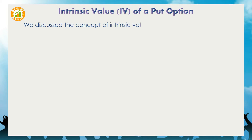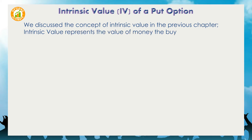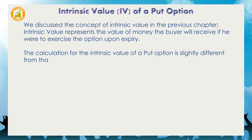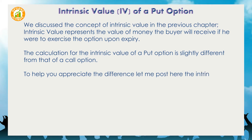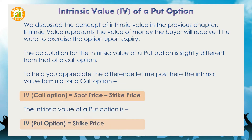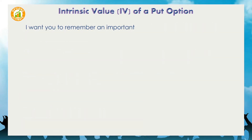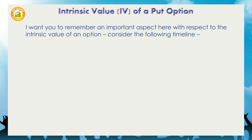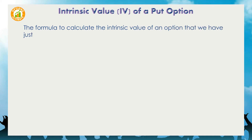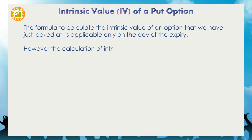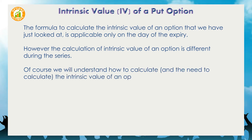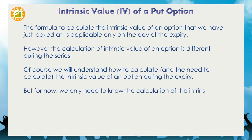We discussed the concept of intrinsic value in the previous chapter. Intrinsic value represents the money the buyer will receive if he were to exercise the option upon expiry. The calculation for the intrinsic value of a put option is slightly different from that of a call option. The intrinsic value of a call option equals spot price minus strike price, whereas the intrinsic value of a put option equals strike price minus spot price. Importantly, this formula is applicable only on the day of expiry; the calculation during the series is different. For now, we only need to know the calculation of intrinsic value upon expiry.